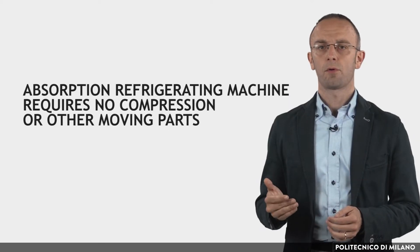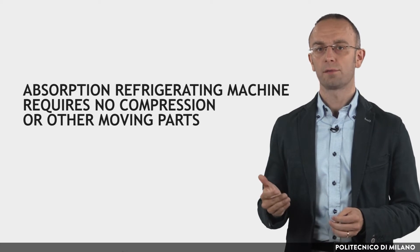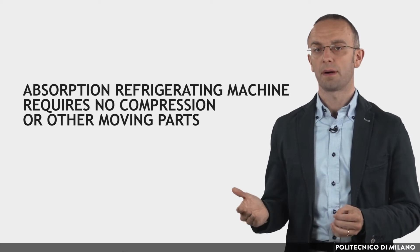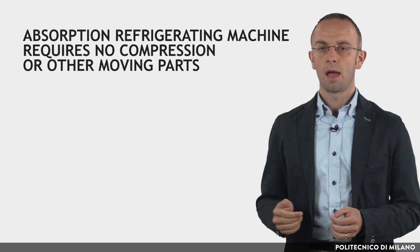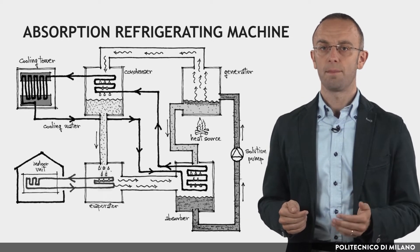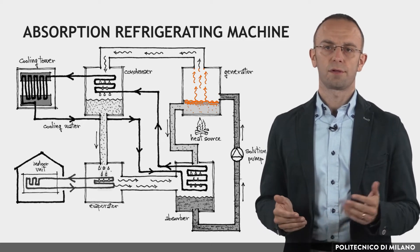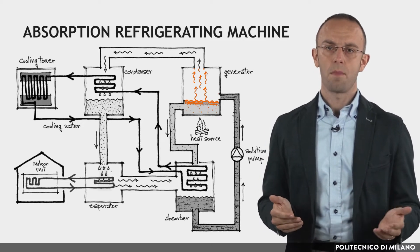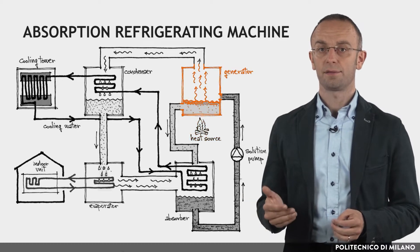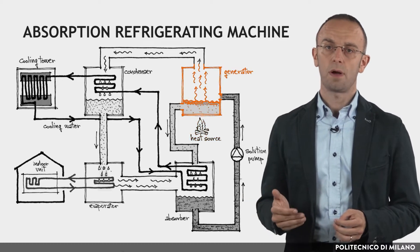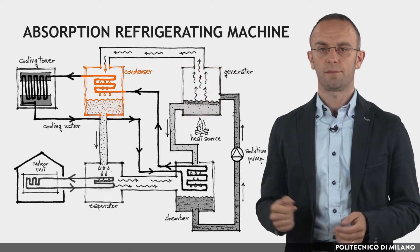Compared to the vapor compression chiller, the absorption machine requires no compressors or other moving parts to operate the thermodynamic cycle, but uses a source of heat in place of the compressor. A refrigerant solution, such as water-ammonia, is heated by a heat source in the generator, raising its temperature until it partially vaporizes and flows to the condenser.